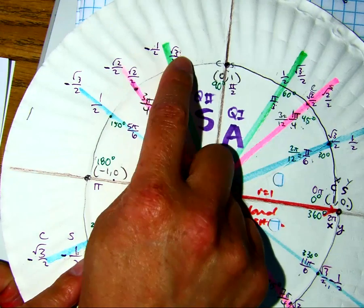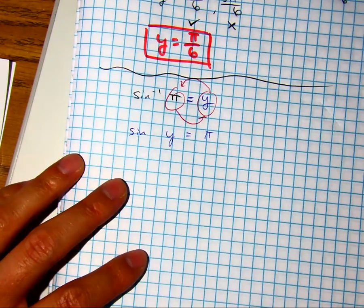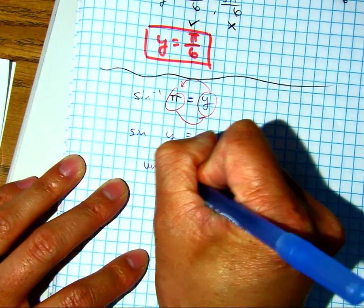So we're just trying to find, well, what's the answer? None of these will equal pi. So if it's not on your unit circle, you just write your answer is undefined.